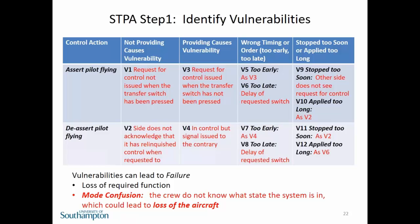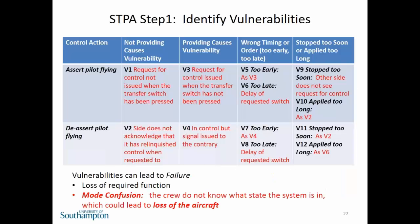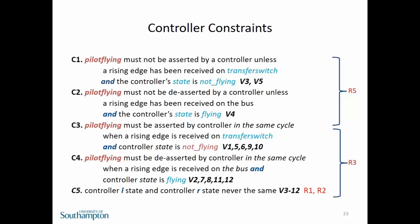A vulnerability is a state of the system which could lead to failure. The first type is loss of required function — serious, but if you know you've lost the function, you can mitigate against it. What is much more worrying, especially from a security point of view, is mode confusion: if one or more vulnerabilities is exploited and the crew don't know what state the system is in, which could lead to loss of the aircraft. So there are two cases: loss of functionality and mode confusion — you want to avoid mode confusion as it's the most dangerous.